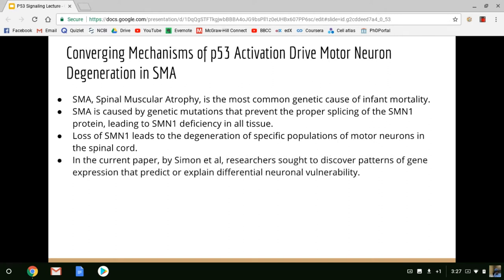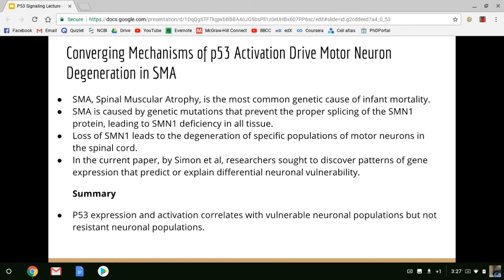In the current paper by Simon et al., the researchers sought to discover patterns of gene expression that predict or explain this differential neuron vulnerability. In other words, what can gene expression tell us about why medial motor neurons die and lateral motor neurons survive? What explains that discrepancy? And this is what they discovered. First, they found that p53 expression and activation correlates with vulnerable neuronal populations but not the resistant neuronal populations. So many of the genes they found to be upregulated were known products of p53-mediated transcription. They were downstream of p53. And this only occurred in cell populations that are known to die very early in SMA and not so much in populations that are relatively resistant.